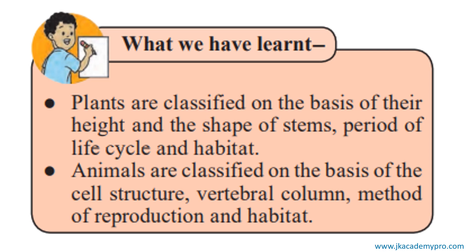So what have we learnt? We have learnt that plants are classified on the basis of their height and the shape of stems, their period of life cycle, and their habitat. These are the different ways we can classify plants: on the basis of height, the shape of stems, how long they live — that is the period of life cycle — and where they live, which is called the habitat.